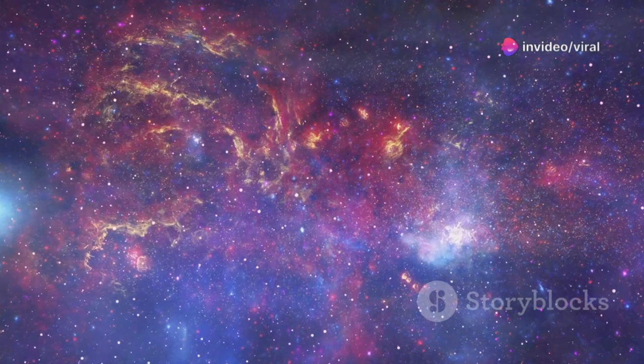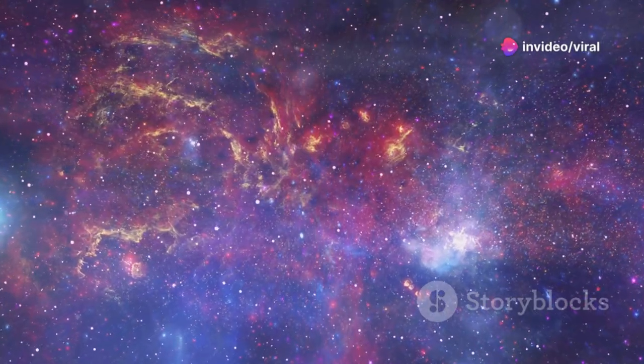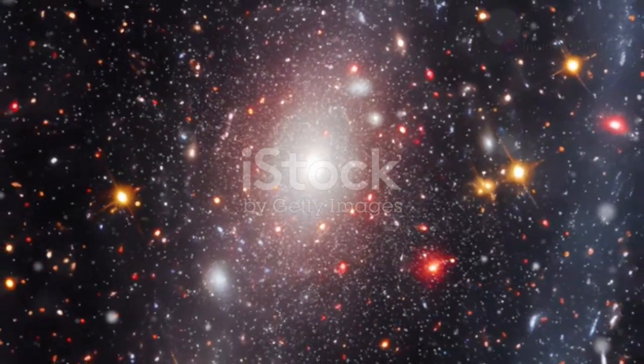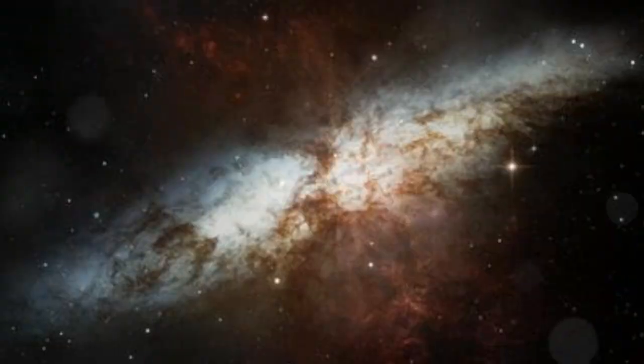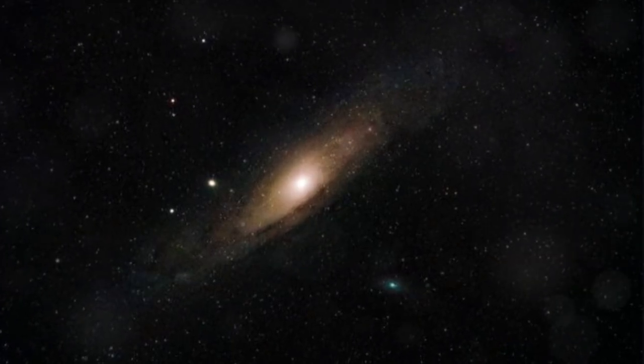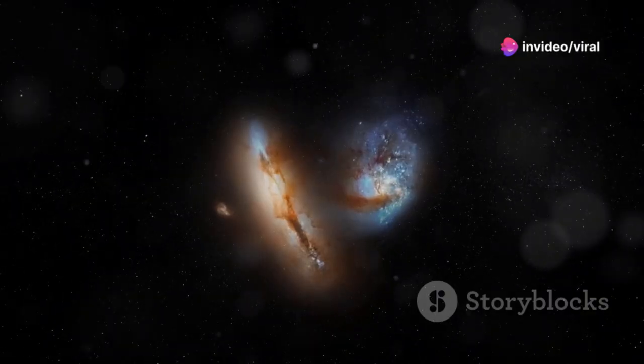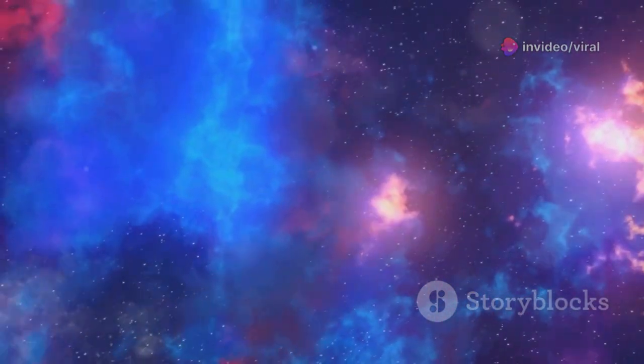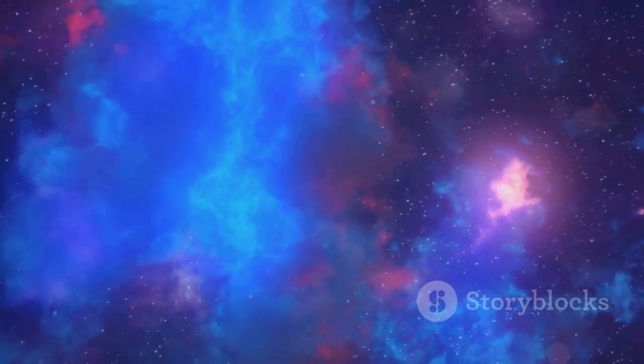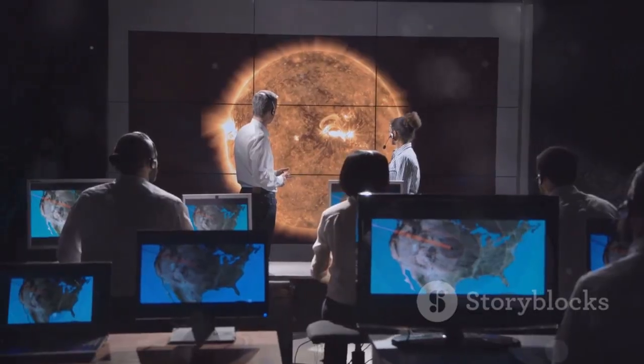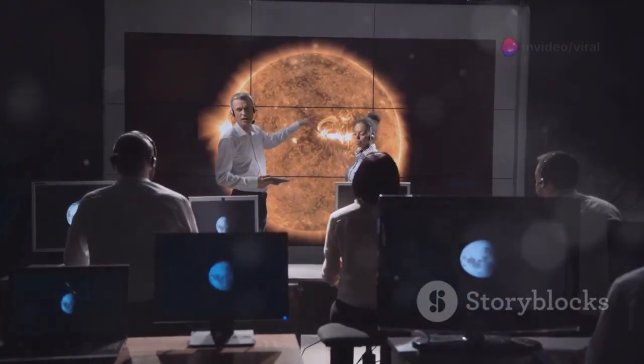Webb promised to find the universe's first galaxies, and what it found was astonishing. Scientists expected small, chaotic galaxies, the universe's saplings. Instead, Webb revealed massive, mature galaxies just 500-700 million years after the Big Bang. It's like finding a fully grown oak where you expected a sprout. These galaxies are too big, too bright, too old for their age. Ghosts from a past that shouldn't exist. The discovery shocked astronomers and challenged our understanding of galaxy formation.